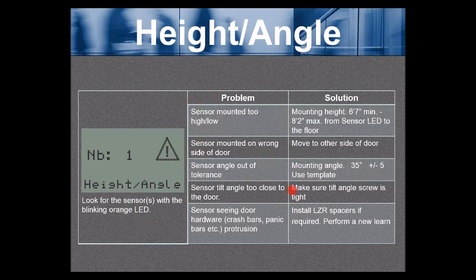The sensor tilt angle is too close to the door. Check the sensor tilt angle screw is tight. There's an adjustment angle screw on the back of the sensor that should be tightened down. And it should be tight by default. Next, the sensor is seeing the door hardware, crash bars, panic bars, etc.